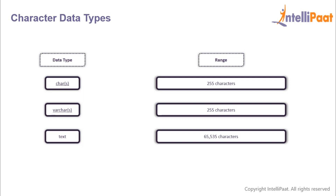Then we have the VARCHAR data type, which again takes in size as the argument. VARCHAR is a variable length data type, unlike CHAR. So if you set the size to 30 and give only 3 characters, the memory consumed would be only 3. Then we have the TEXT data type, which can take in a string with a maximum length of 65,535 characters.